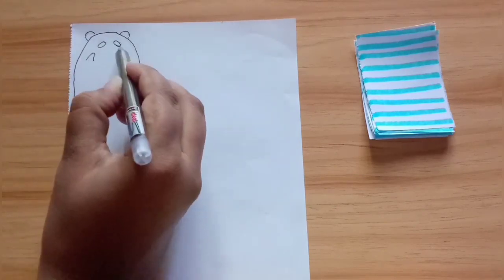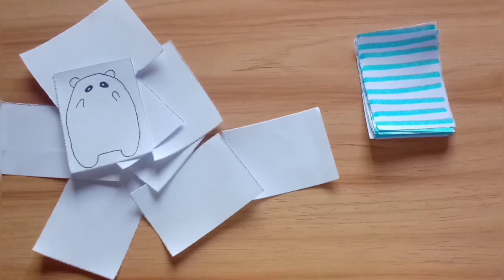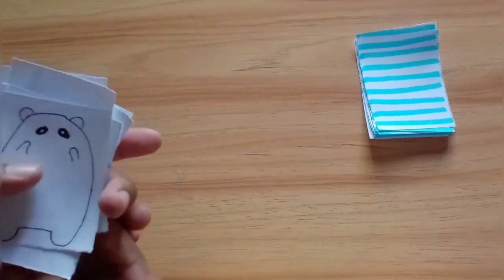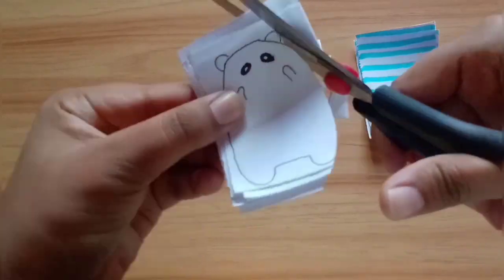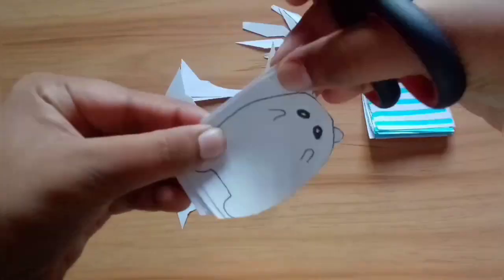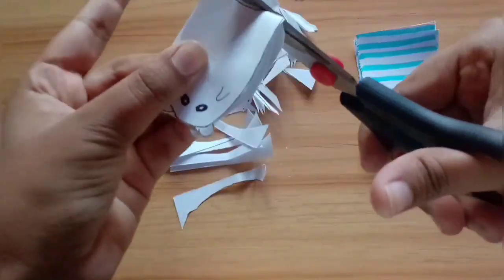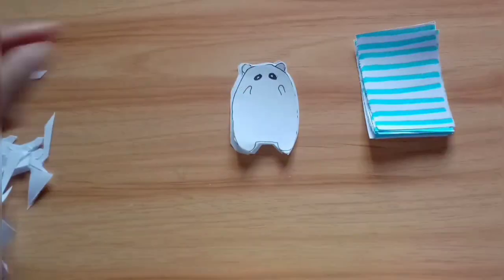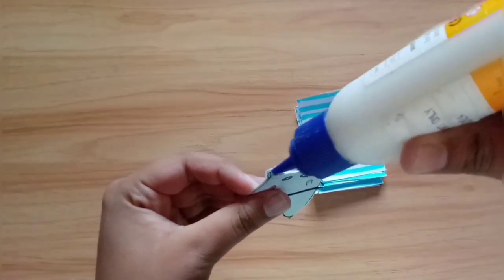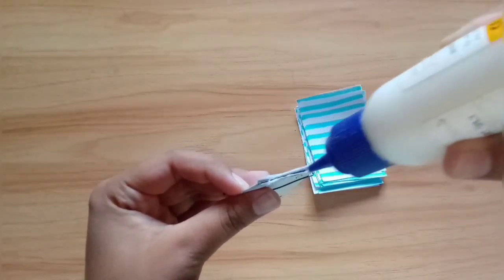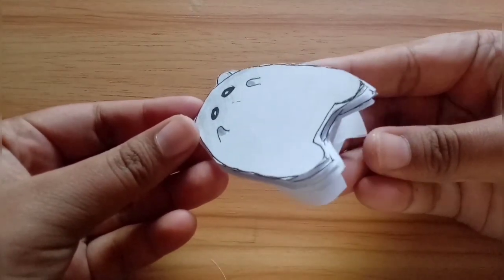Similarly, you can make animal-shaped memo pads. Simply draw an animal and trim it according to the shape. Leave it for three to four minutes to dry, and you'll have your own DIY memo pad.